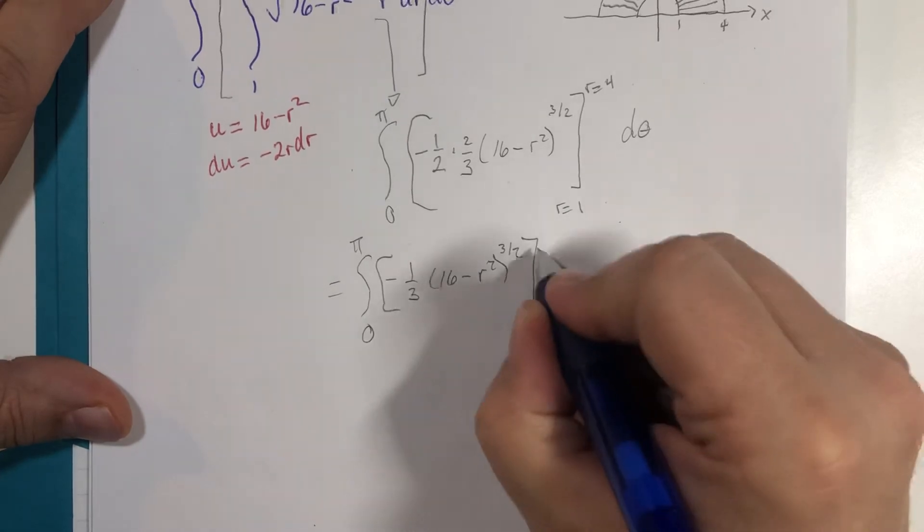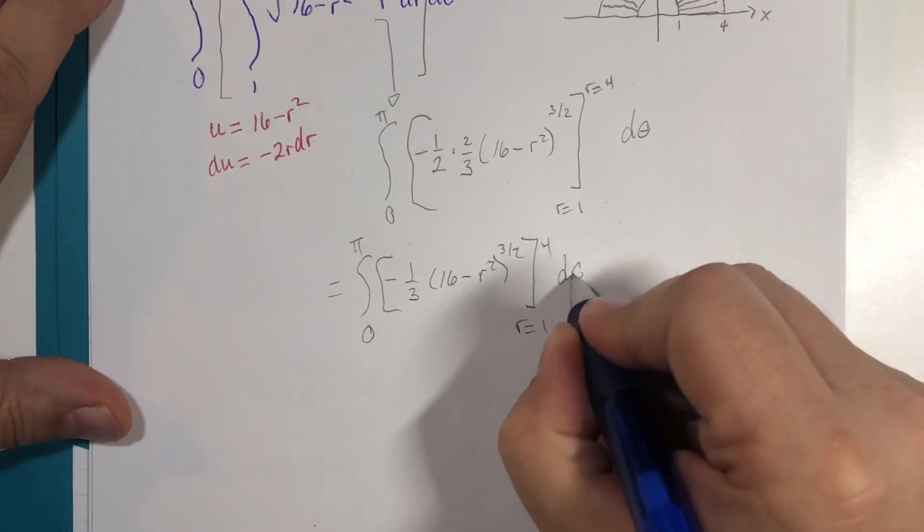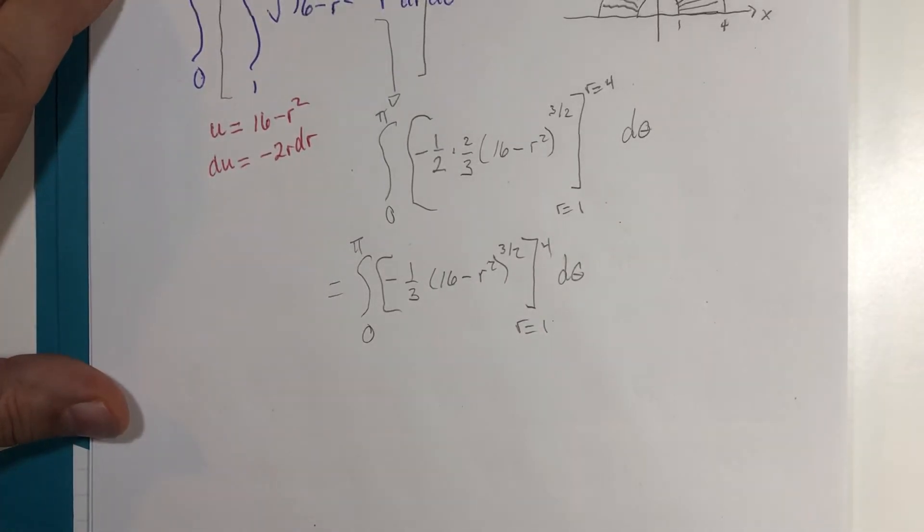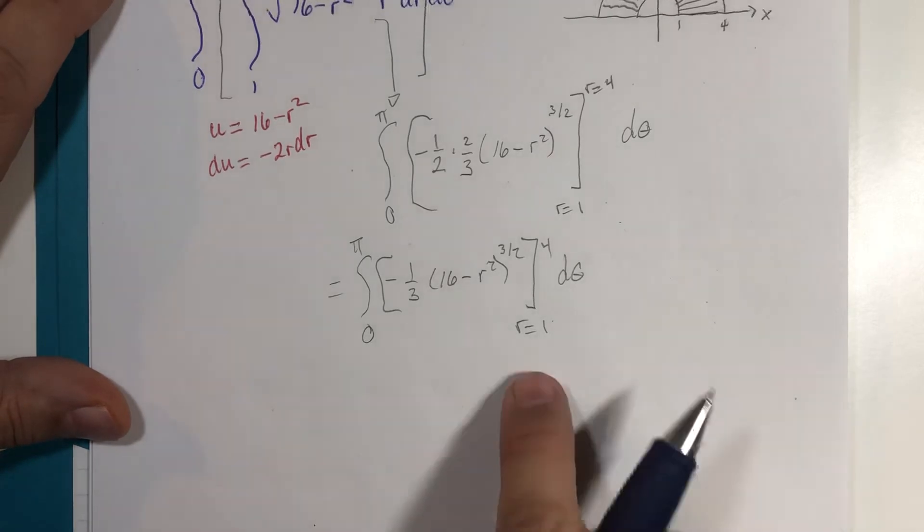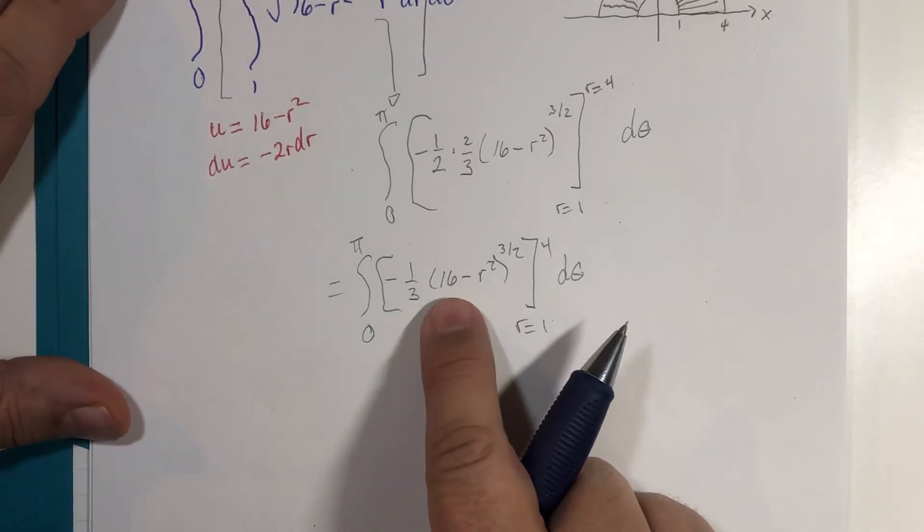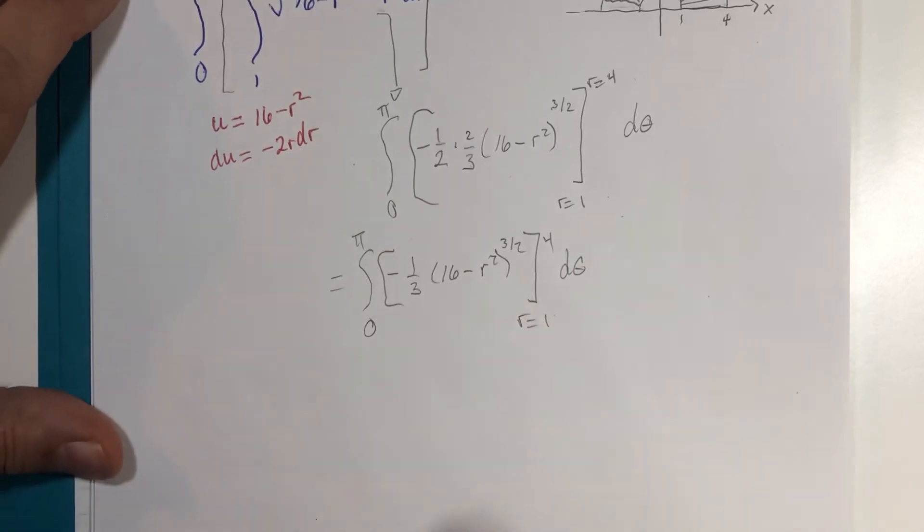If r goes from 1 to 4, if r is 4, this will be 16 minus 16 is 0.